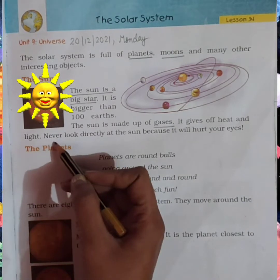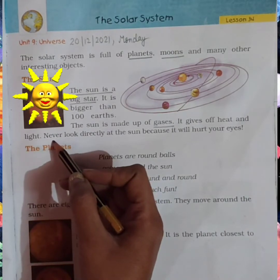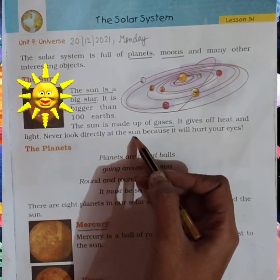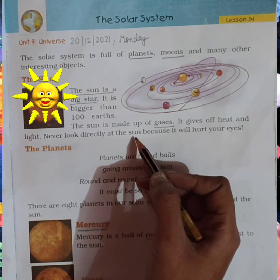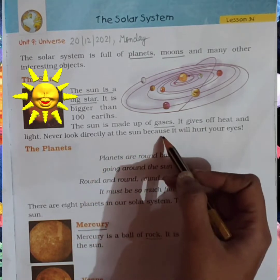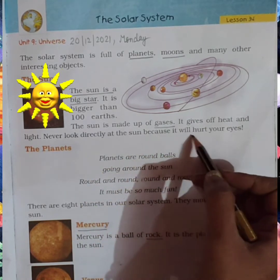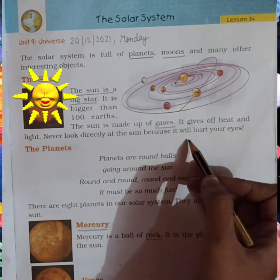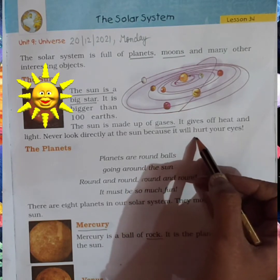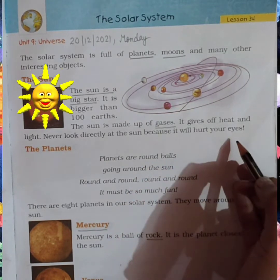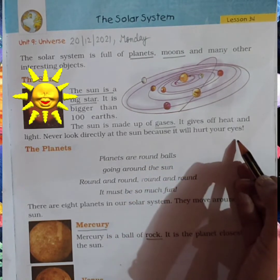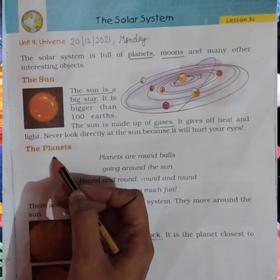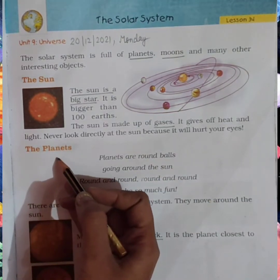It gives off heat and light. Never look directly at the sun, because it will hurt your eyes — ye aapke eyes ko hurt kerta hai, is se aapke eyes kharab ho sakti hai. Now, the planets — ab hum planets ke baare mein padhenge.